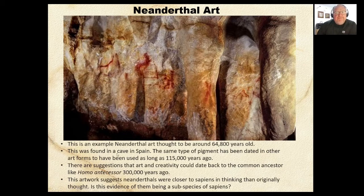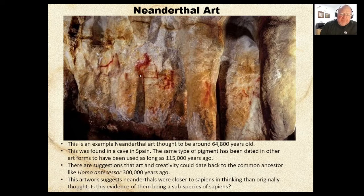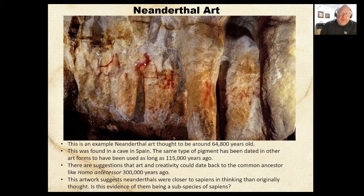It was found in a cave in Spain, and the same type of pigment has been dated to other art forms as old as 115,000 years ago. The pigment used is ochre — another word for iron oxide, or rust — that reddish-orange-brownish color. Soil or clay containing a lot of iron exposed to oxygen forms iron oxide, which can be mixed with oil to use as a pigment.